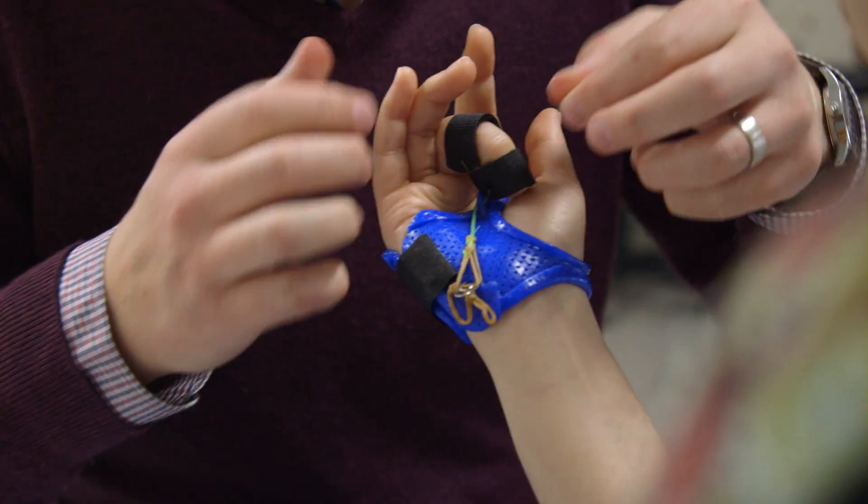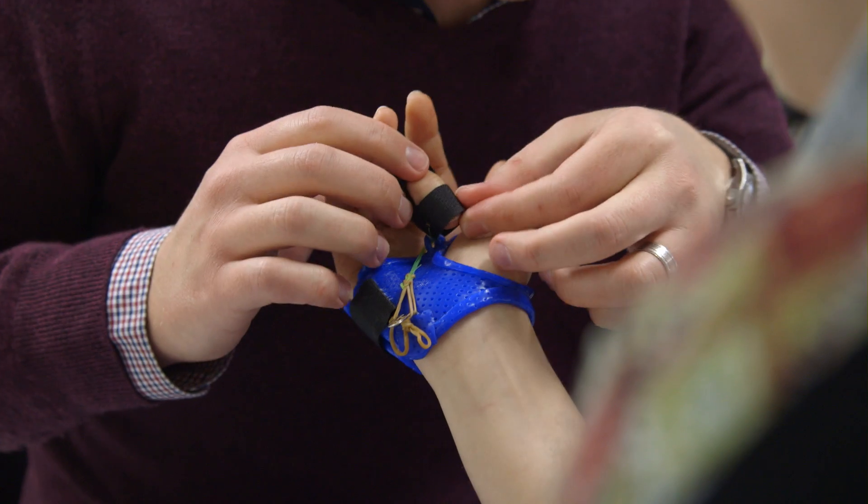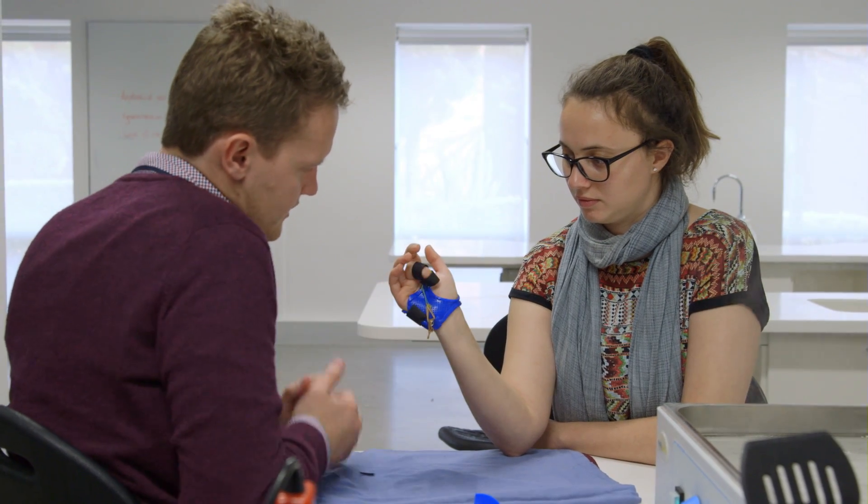After doctors operate on a finger tendon, specialists apply a splint so that unwanted movement doesn't damage the repairs.